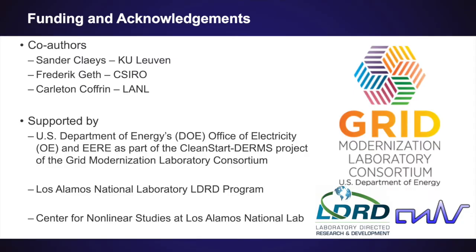Before I get started, I want to introduce the other co-authors and acknowledge our funding sources. Power Models Distribution and this paper contain significant contributions from Sander Claes, a PhD student at KU Leuven, Frederick Geth at CSIRO, and Carlton Coffrin, also here at Los Alamos National Lab. This project was funded primarily through the U.S. Department of Energy's Office of Electricity and Office of Energy Efficiency and Renewable Energy as part of the Clean Start DERM's GMLC project, also by Los Alamos National Laboratory through the LDRD program and by the Center for Non-Linear Studies at Los Alamos.